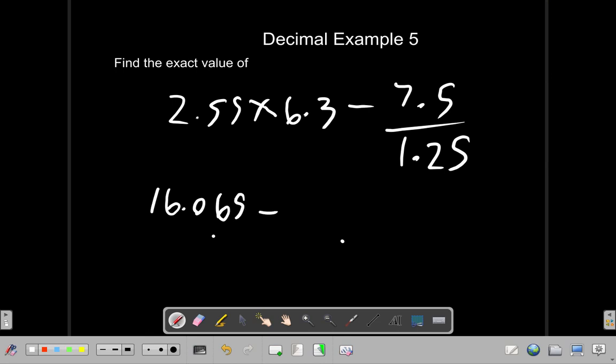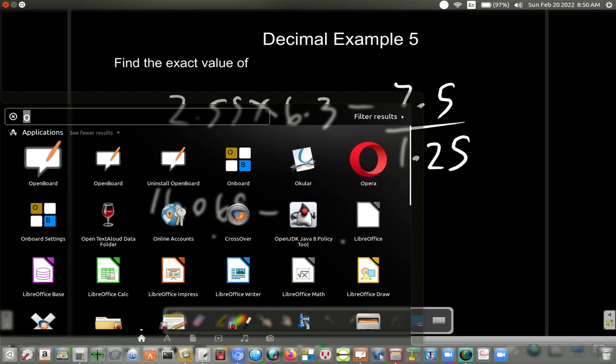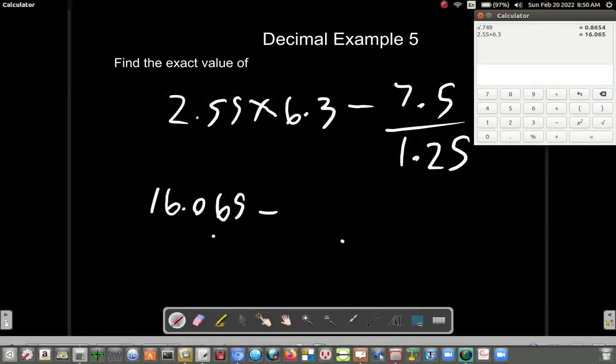Then 7.5 divided by 1.25. Alright, 7.5 divided by 1.25 equals 6.